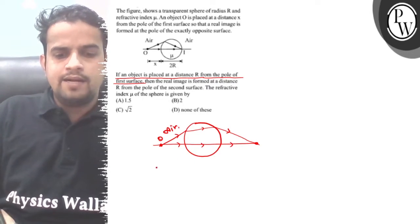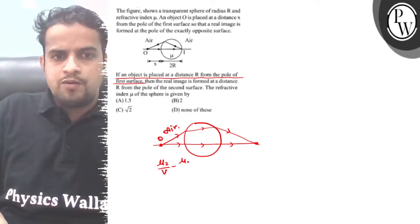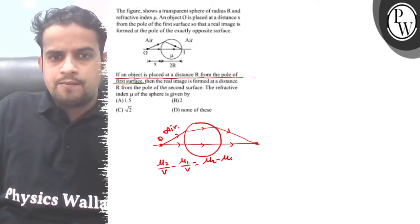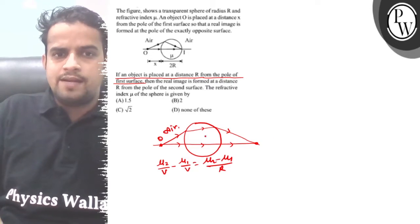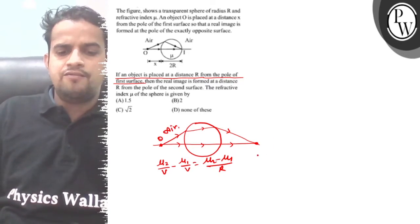In this condition, we apply the formula for refractive index: mu2 upon v minus mu1 upon u equals mu2 minus mu1 upon r. In this condition, v is going to be infinity.